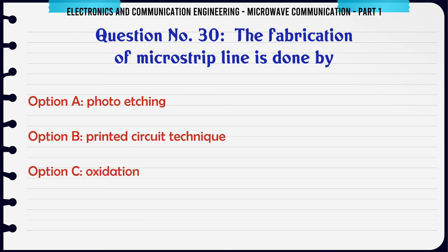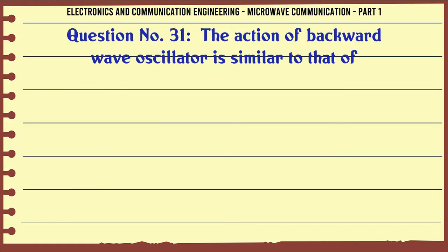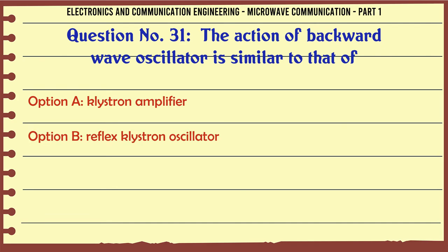The fabrication of microstrip line is done by: A. Photo etching, B. Printed circuit technique, C. Oxidation, D. Cladding. The correct answer is Printed circuit technique.